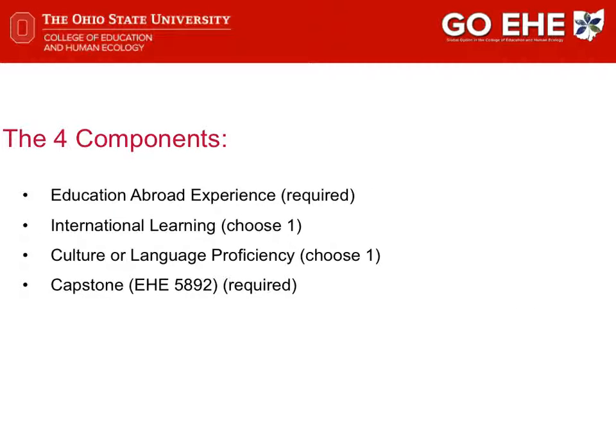To complete the GOEHE program, students must satisfy four components: Education Abroad, International Learning, Cultural Language Proficiency, and the Senior Capstone Course, or EHE 5892.